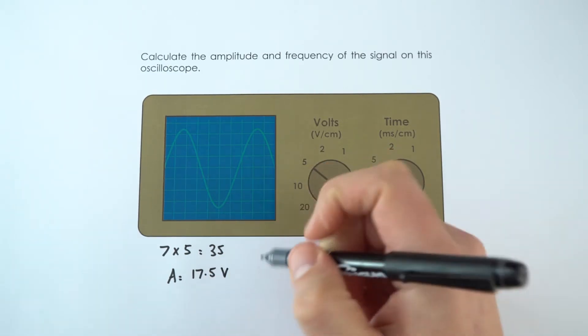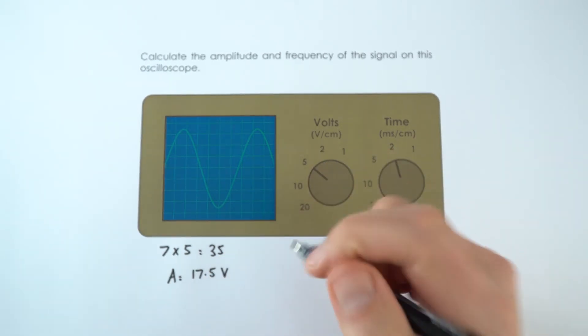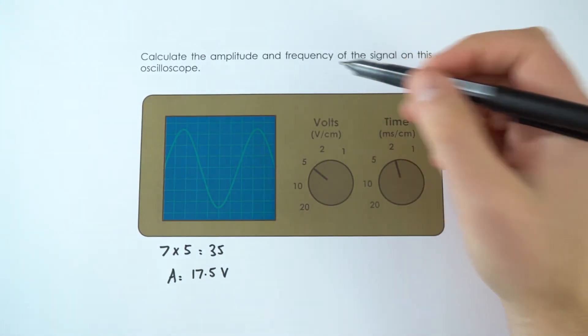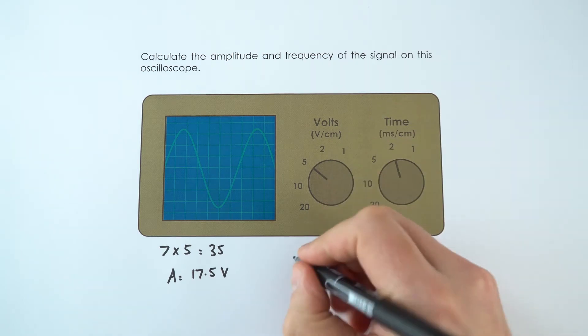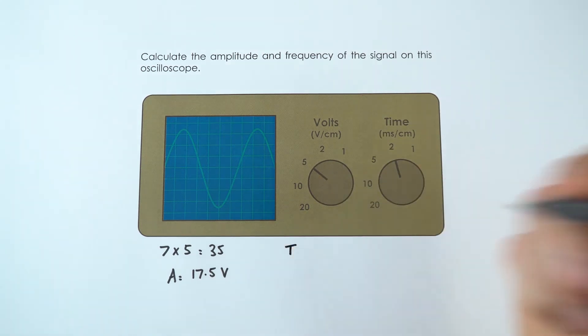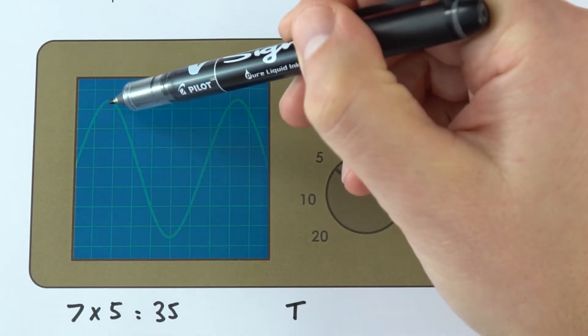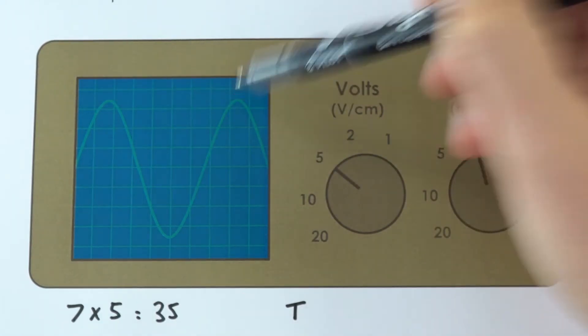This might be a 17.5 volt AC supply, but what's its frequency? To work out the frequency we need to know the time period. The time period is the time for one complete wave cycle. In this case we could go from this point to this point, but it might be easier to measure from peak to peak.